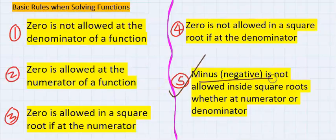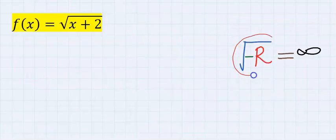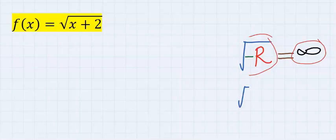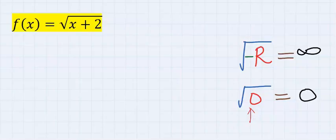Negative is not allowed inside a square root. Negative turns a function to infinity, which is undefined. However, zero is allowed inside the square root, which is zero. Zero can be found on the number line, but infinity is not a number.